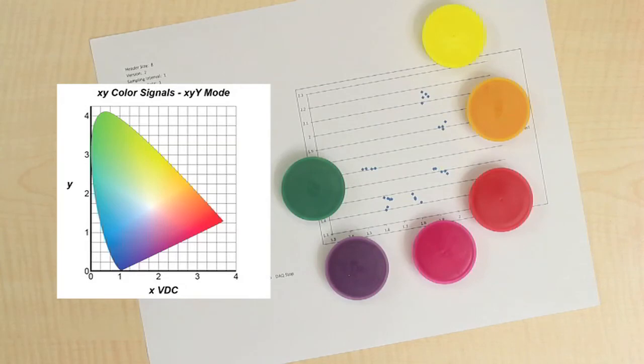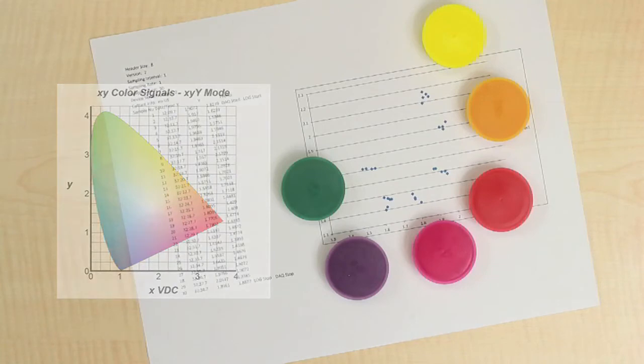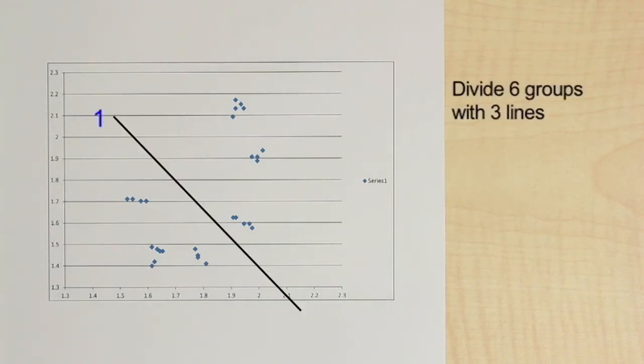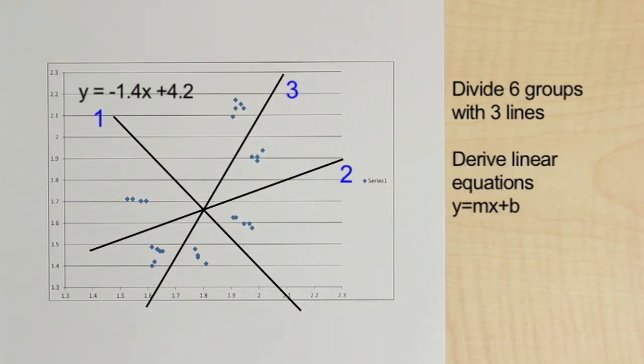Now that we have our data, we can devise a simple and robust strategy to identify each color. Here the simplest way to do this is by dividing the six groups with three straight lines. Then by selecting two points on each line, we can derive its equation using a little basic algebra.